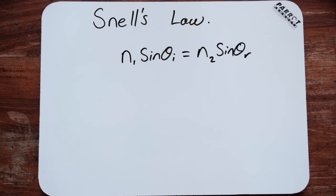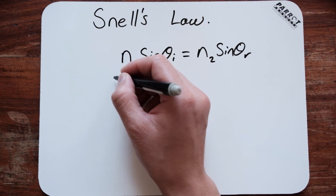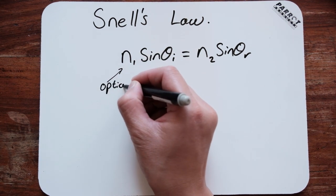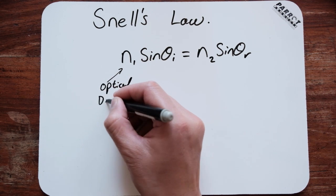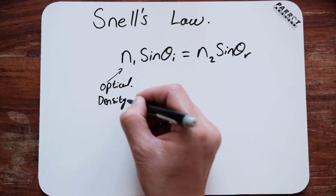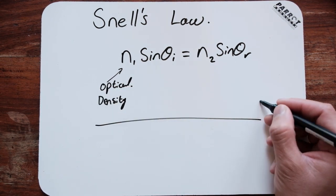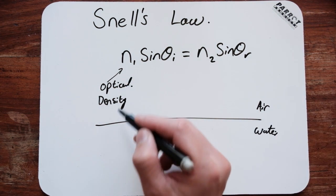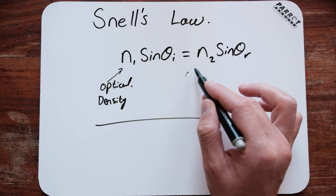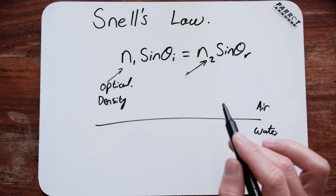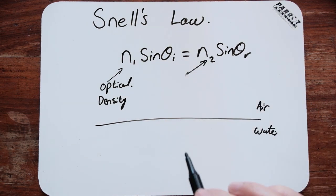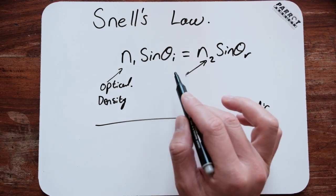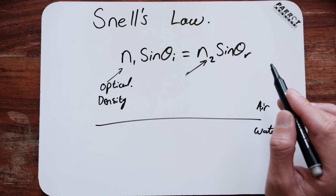N₁ is the optical density of the first medium. So if we're going from something like air into water, then N₁ would be air, N₂ would be water, and we would have, essentially, the change in optical densities. Obviously, sin θᵢ would be the angle of incidence, and θᵣ would be the angle of refraction.